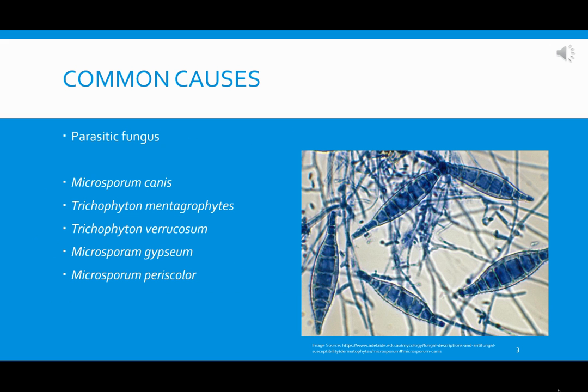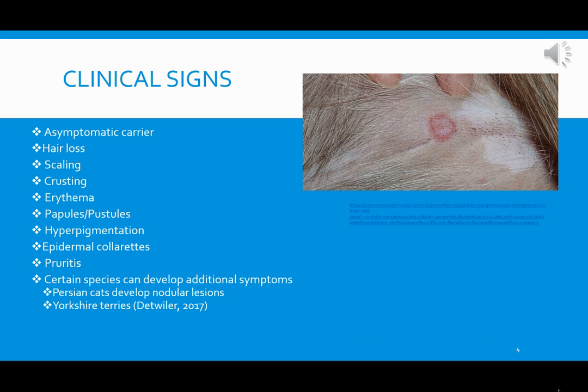Dermatophytosis is caused by a parasitic fungus that attacks the structures of the skin and hair. The most common fungus is the Microsporum family — in particular, Microsporum canis is the most common in both cats and dogs. When seeing small animals, the most common species is going to be Trichophyton mentagrophytes, whereas cats and dogs are generally going to be Microsporum canis.